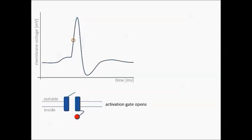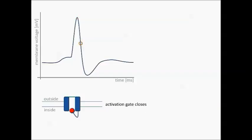As the membrane potential depolarizes during the action potential the activation gate opens and sodium can flow into the cell, further strengthening the depolarization. Near the peak of the action potential the inactivation gate closes, preventing further sodium entry — the channel is now in its inactivated state. As the membrane potential hyperpolarizes the activation gate closes again, though this does not affect sodium flow since the channel is still inactivated. Once the membrane potential returns to its resting state, the inactivation gate reopens — called de-inactivation — and the channel is back in its original state, ready for the next action potential.